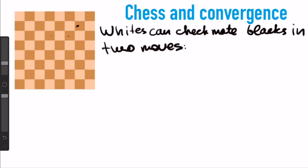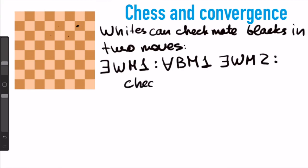It means that there exists white move 1, such that for any black move after that, which I call black move 1, there will be another white move 2, so that checkmate.